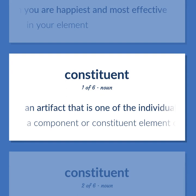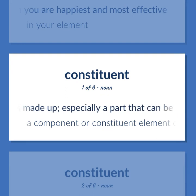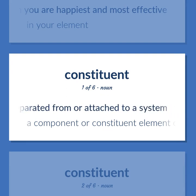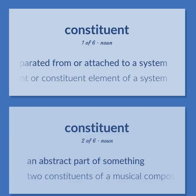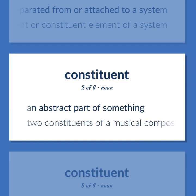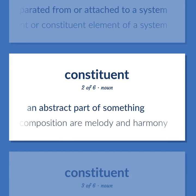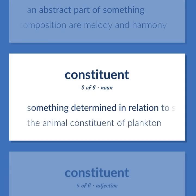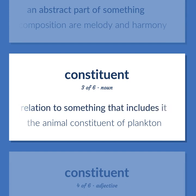An artifact that is one of the individual parts of which a composite entity is made up, especially a part that can be separated from or attached to a system. A component or constituent element of a system. An abstract part of something — two constituents of a musical composition are melody and harmony. Something determined in relation to something that includes it — the animal constituent of plankton.